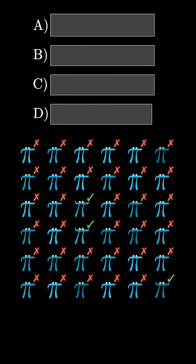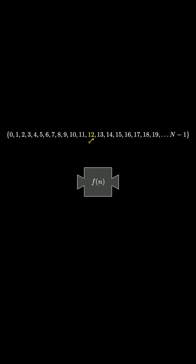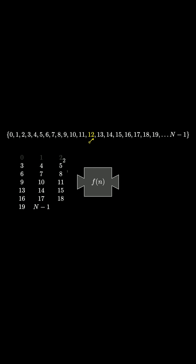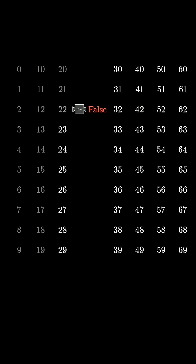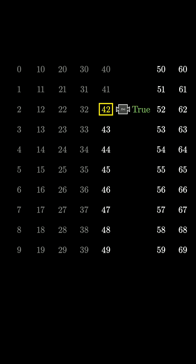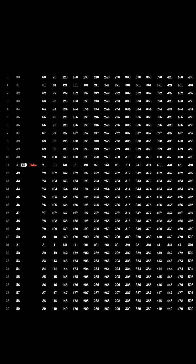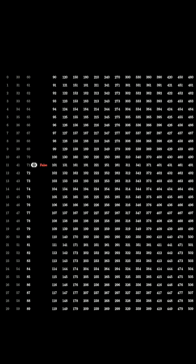Let me show you a quiz that most people get wrong. Imagine I have a function, and there's going to be one special number where if you input it to the function it returns true, but on all other inputs it returns false. Let's say you know that special input is somewhere among the first n numbers. If you want to find that special value, and the only thing you're allowed to do with this function is to simply try it out on inputs, then there's really no better method than guessing and checking.